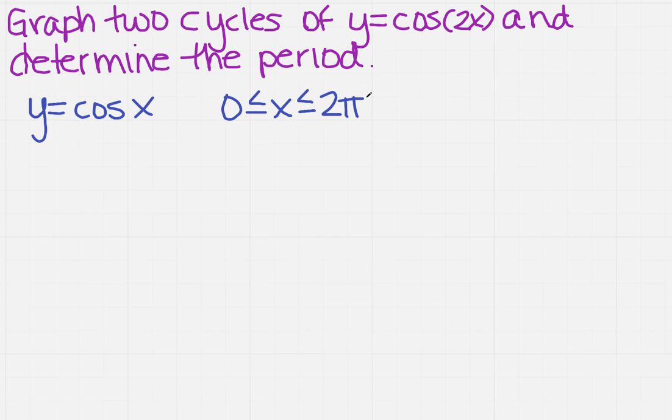So what do I have that's different? Now I have y equals the cosine of 2x. So everywhere there's an x over here, I'm going to plug in 2x.